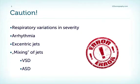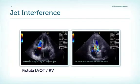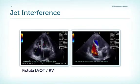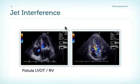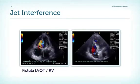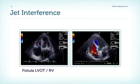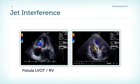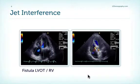You have to be careful because sometimes you have a jet coming from the left ventricle, the LVOT, or the interatrial septum which can mix with the TR jet, making it difficult to distinguish the two jets from each other. This is an example where the TR jet interferes with a second jet coming from the LVOT. This was actually a patient who had aortic valve repair and a fistulous connection between the LV/LVOT and the right ventricle. This makes it quite difficult to really quantify the severity of tricuspid regurgitation.